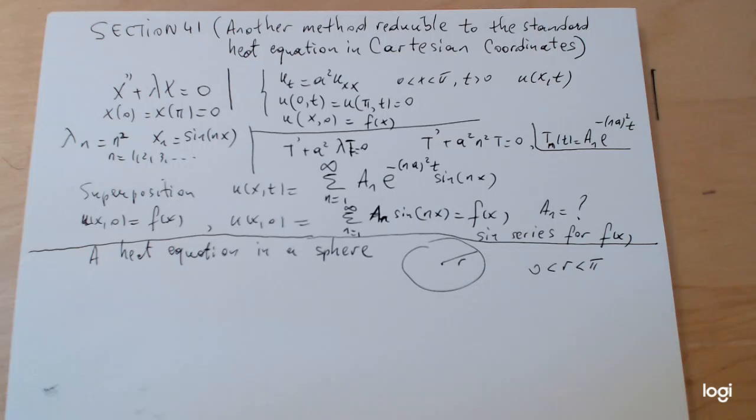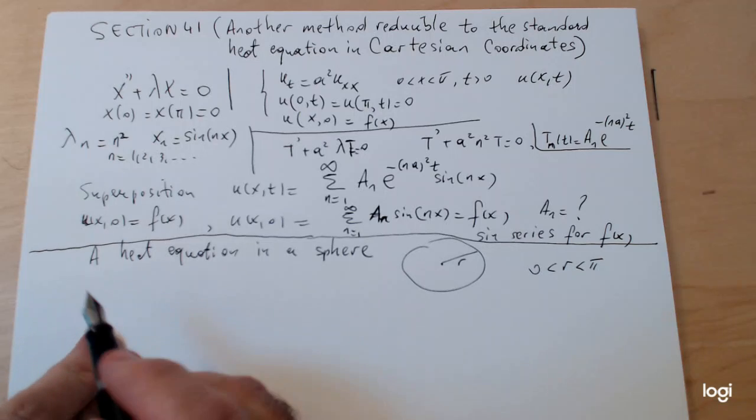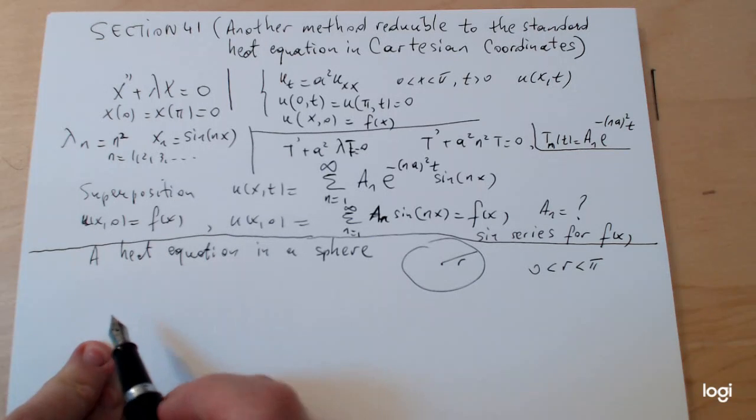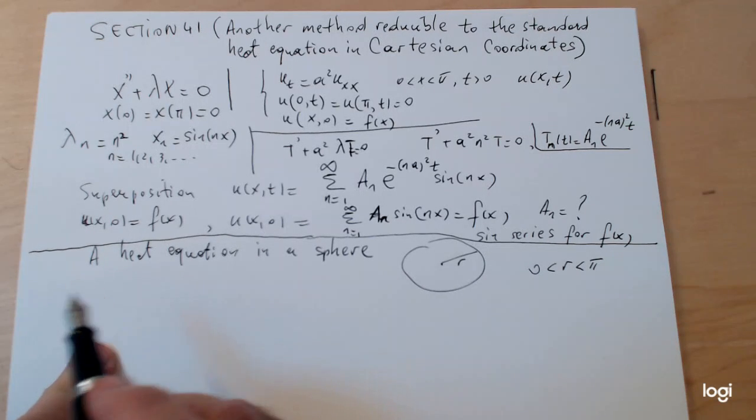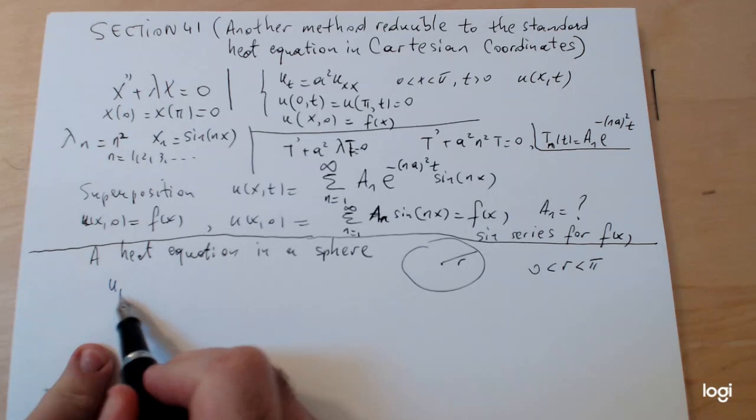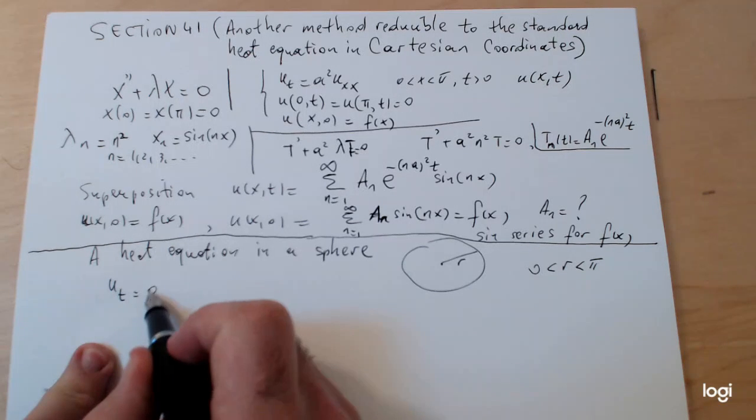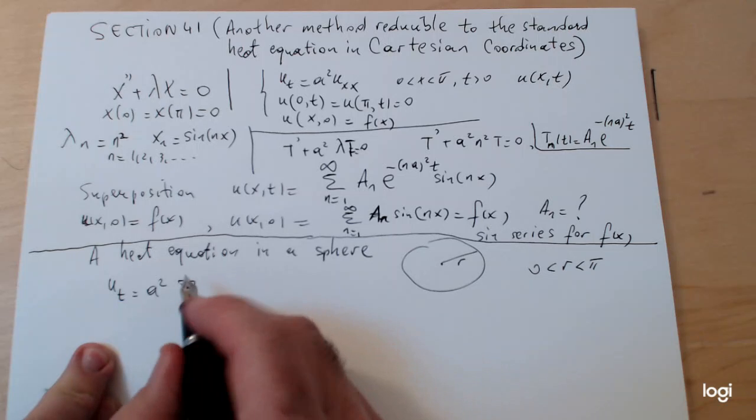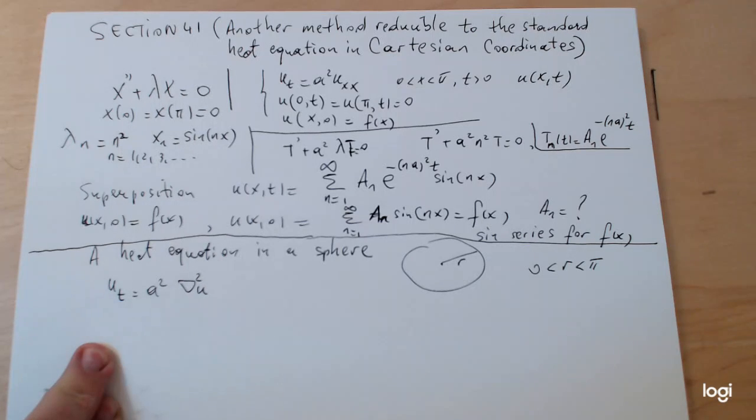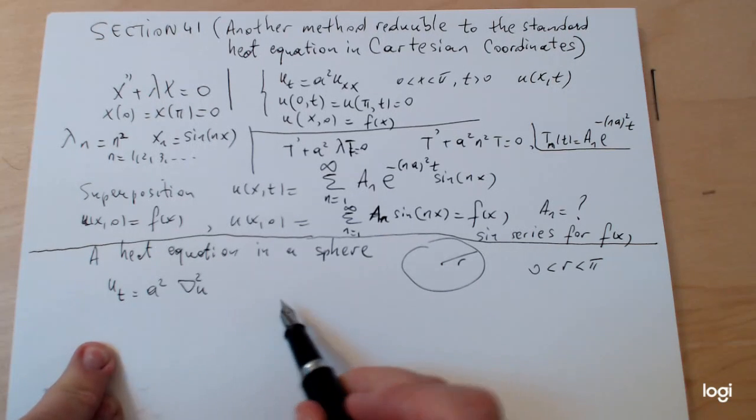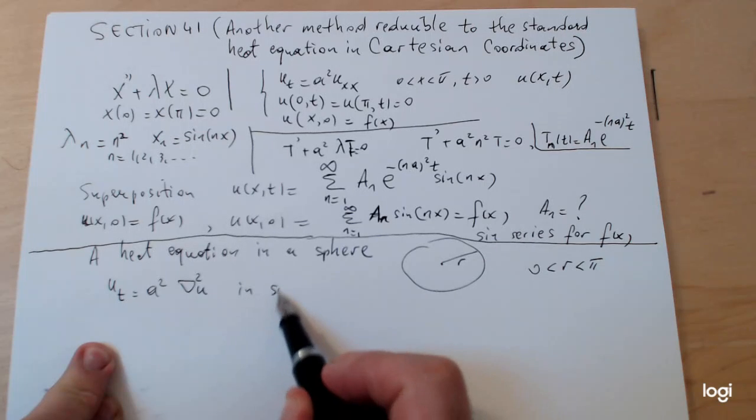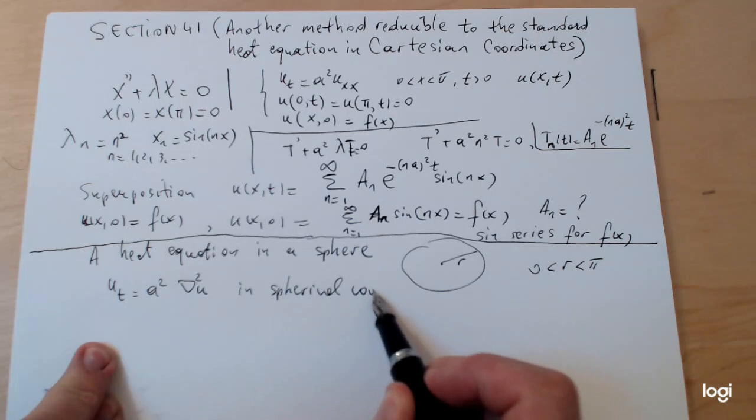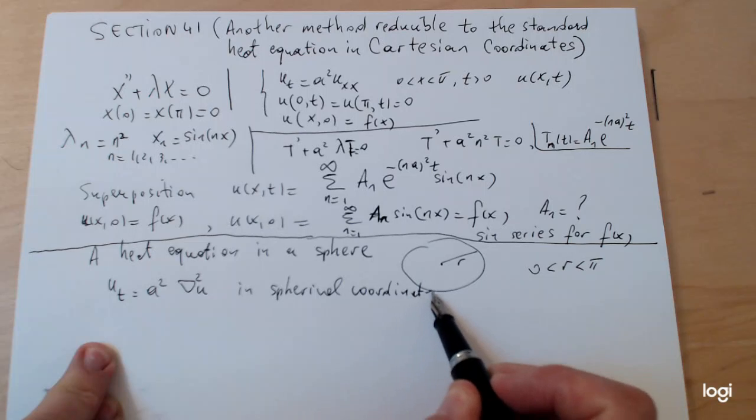Remember the Laplacian in spherical coordinates? Typically when you write your heat equation as you normally do, remember the notation for the Laplacian is given by the symbol which in Cartesian coordinates is just u_xx. In spherical coordinates, this equation, assuming that my temperature depends only on the radius and on the time as I mentioned before, looks like this: